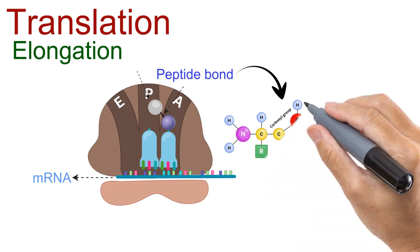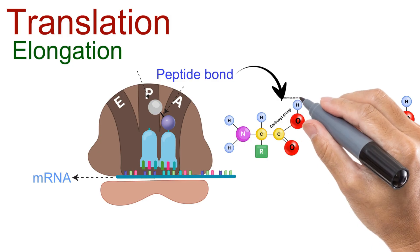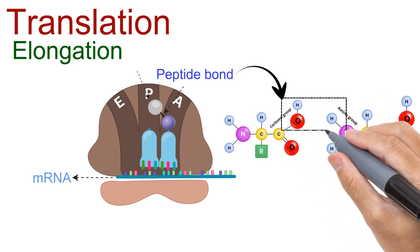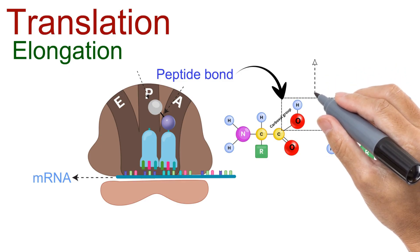One amino acid has a carboxyl group, and the next amino acid has an amino group. During the reaction, the hydroxyl group from the carboxyl end of one amino acid and a hydrogen atom from the amino group of the next amino acid are removed.